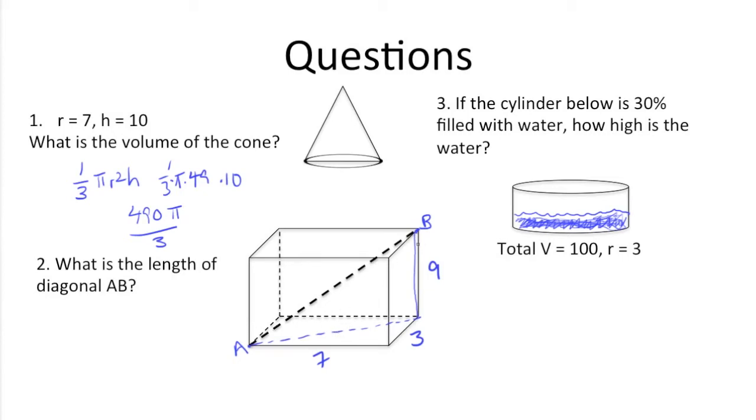So in order to get that, we'd need to know this, which we do, it's 9, and we'd need to figure out what this value would be. This leg is actually the hypotenuse of a triangle down here at the base. This is a diagonal of the rectangle at the bottom. We know that these sides are 3 and 7, so using the Pythagorean theorem,